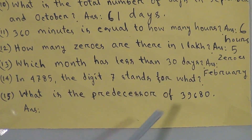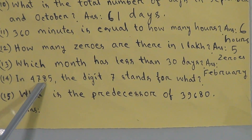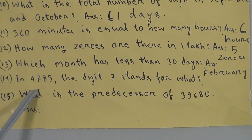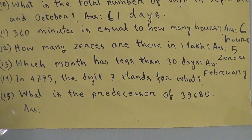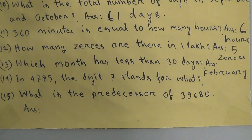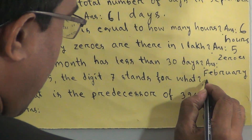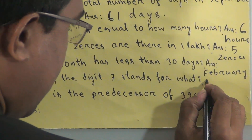Question 14: in the number 3,34,785, what does the digit 7 stand for? The digit 7 exists in the hundreds place. So the place value of 7 is seven hundred. The answer is hundreds.